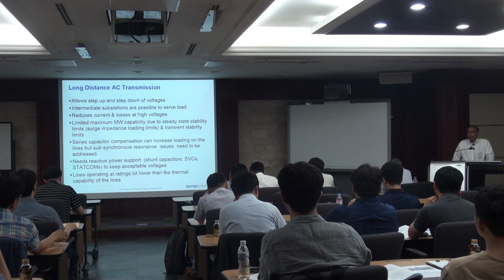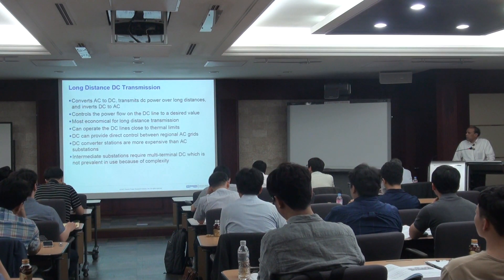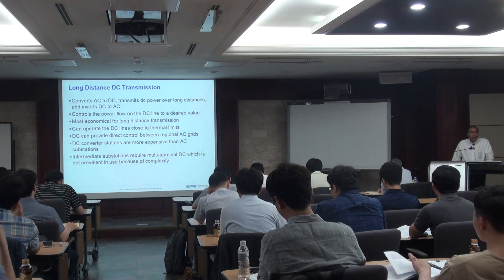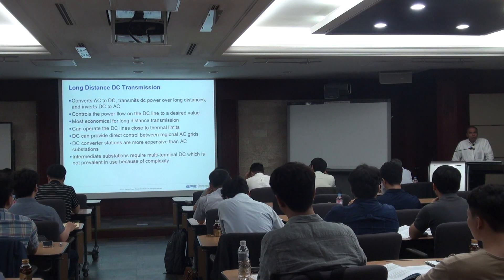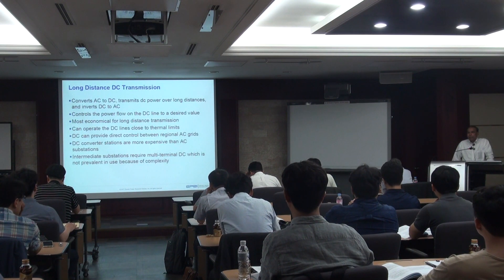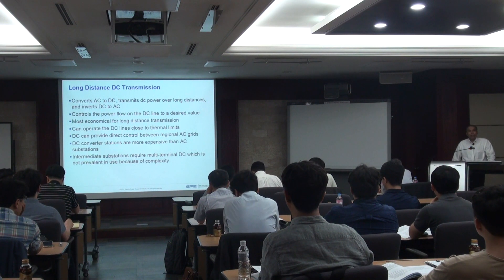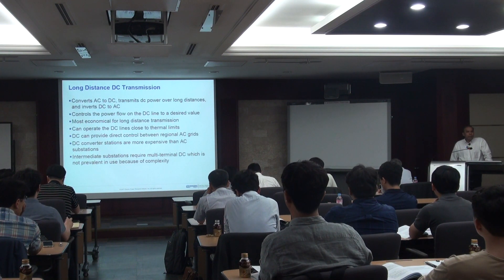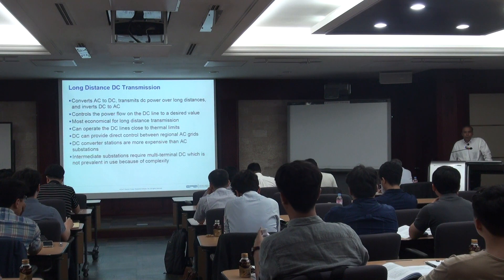For DC transmission, the only generation is still AC, so we have to convert AC to DC using converters and transmit using DC transmission lines over long distances, then invert DC back to AC, because our distribution lines and loads are still AC. Only at the transmission level are we using DC.